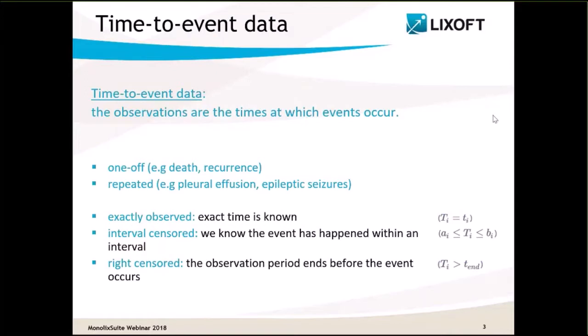Let's recall the different types of time-to-event data. In time-to-event data, the observations are the times at which some events occur. We can, for instance, record the time for the diagnosis of a disease and death, or the time between administration of a drug and the next epileptic seizure or other adverse events.